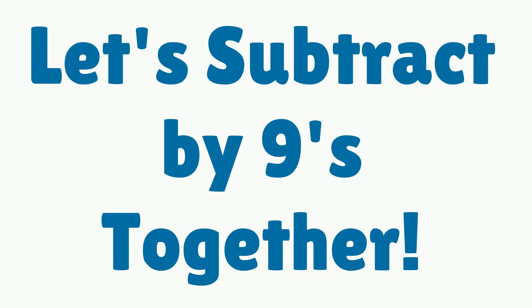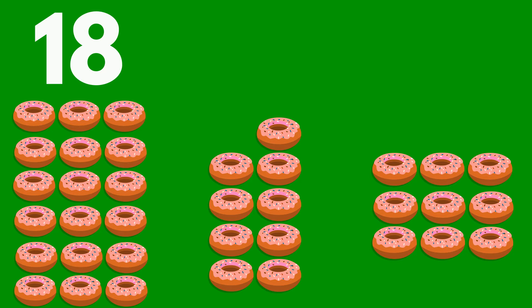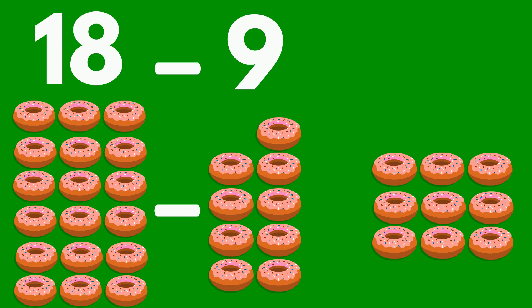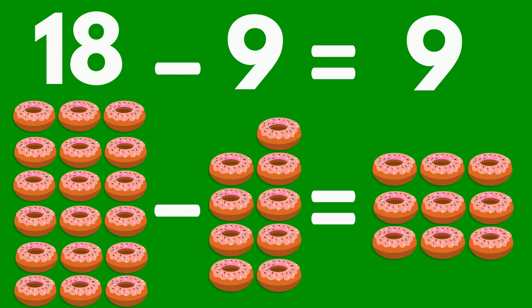Let's subtract by 9's together. 18 doughnuts minus 9 doughnuts equals 9 doughnuts.